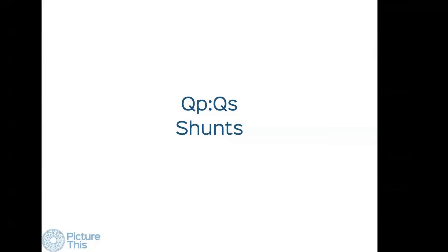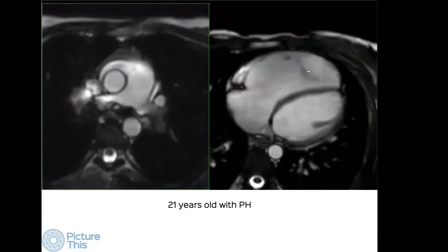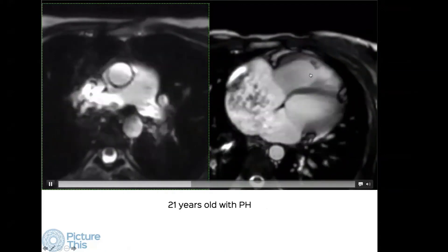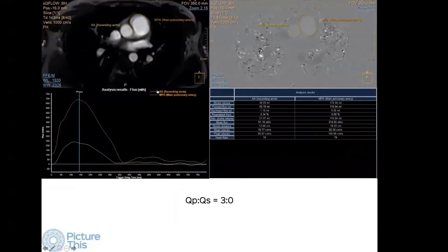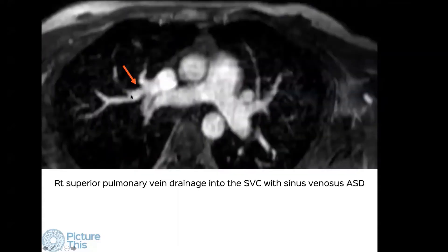We can also measure QP/QS. Here is a 21-year-old with pulmonary hypertension — on the four-chamber view you can see the RV is markedly dilated. The MPA is also dilated. Measuring flow at the same level in the ascending aorta and pulmonary artery, the absolute stroke volume is three times greater in the pulmonary artery, giving a QP/QS of three. We found anomalous drainage of the right superior pulmonary vein into the superior vena cava with a sinus venosus ASD, confirming the cause of pulmonary hypertension.